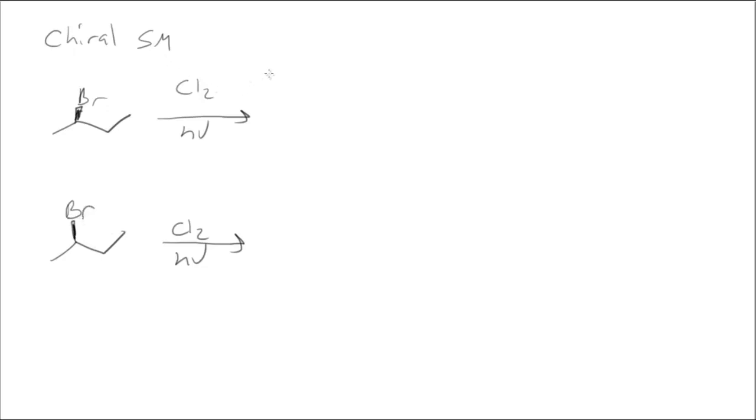Now what if we have a chiral starting material? There's a few different possibilities for what can happen. We can get a reaction here at the stereocenter. We can get one here at the primary positions away from the stereocenter, or we can get one here alpha to the stereocenter, the other secondary position.